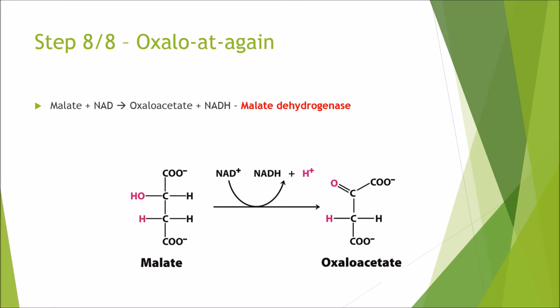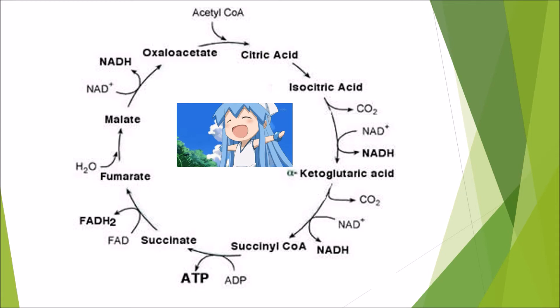Finally, step 8 of 8: malate and NAD come together and we reform oxaloacetate, ending up with another reduced electron carrier, and that is catalyzed by malate dehydrogenase. So here we come into a complete full circle. Looking at the cycle again, at a second pass it is not actually that bad — you can clearly see what is going on at each separate step.